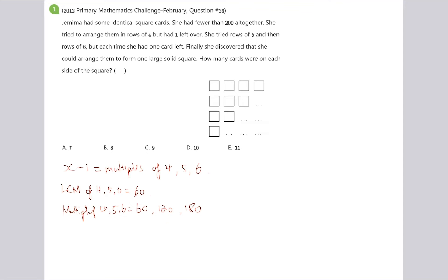Now, if our number x minus 1 is multiples of 4, 5 and 6, then our number x is just going to be 61 or 121 or 181. And we see that only 121 is a square number. And this is 11 squared.